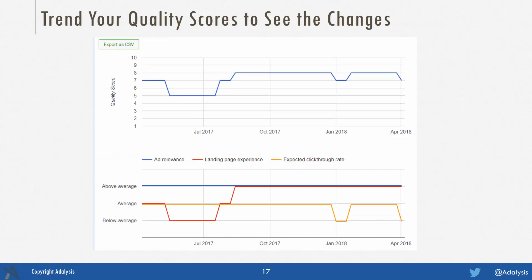You also want to trend your data to see how it changes over time. For instance, a keyword might start off with below average landing page experience, get worked on so the page gets better, while ad relevance stays above average. If expected click rate drops and then gets fixed but drops again, you want to look at those CTR changes to get CTR back to at least average. By trending quality score, you can see how your factors perform over time and correlate changes to previous ad tests or account organization changes. You can make trend charts by going into AdWords, adding all the sub-factors, downloading data segmented by time, and creating the charts — or Adalysis will automatically make these charts at the account, campaign, ad group, or keyword level.